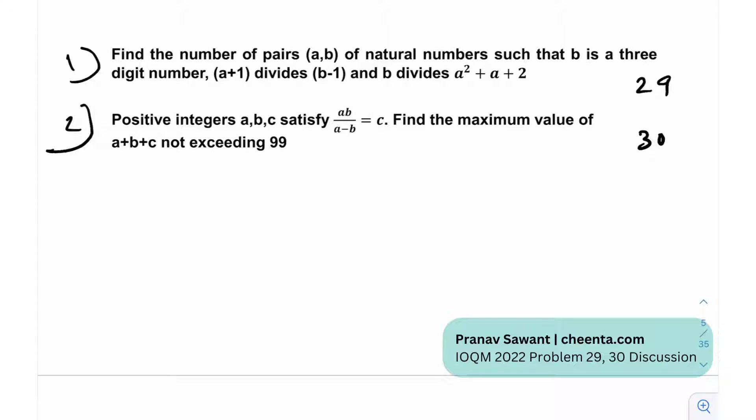When you read this problem, there are certain things you can notice. First is that b is a three digit number. Maybe that's a very important fact because if that fact wasn't needed they probably would not have given such a detail in the question. The intuition that I'm getting is that the fact that b is a three digit number might limit our cases to some finite value of a, b, right?